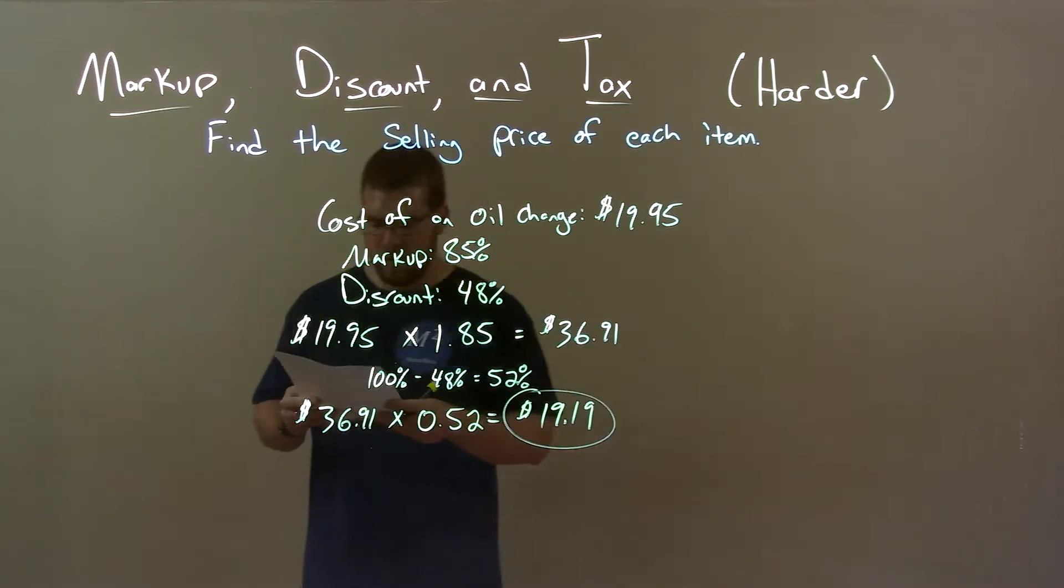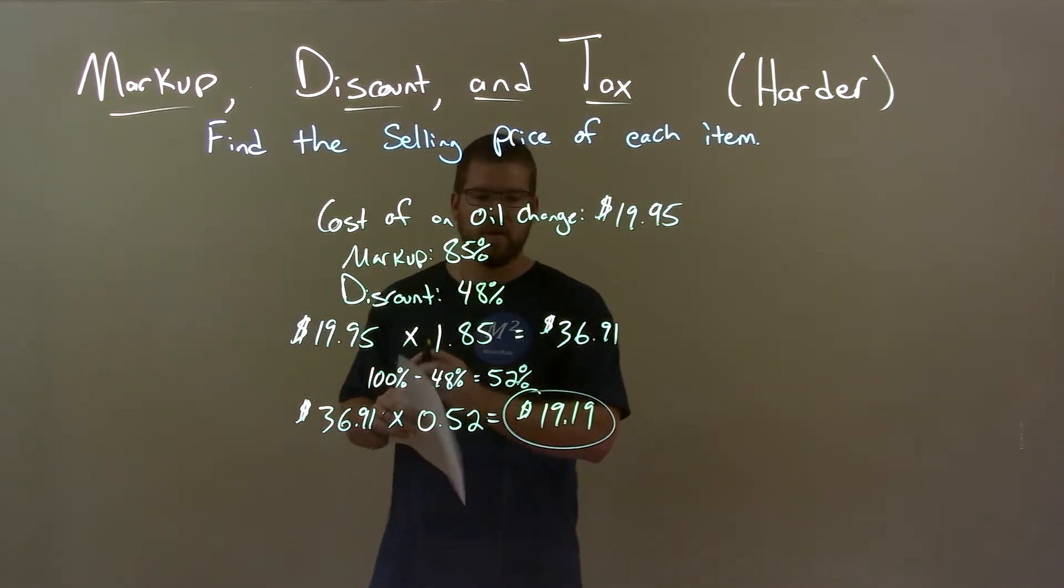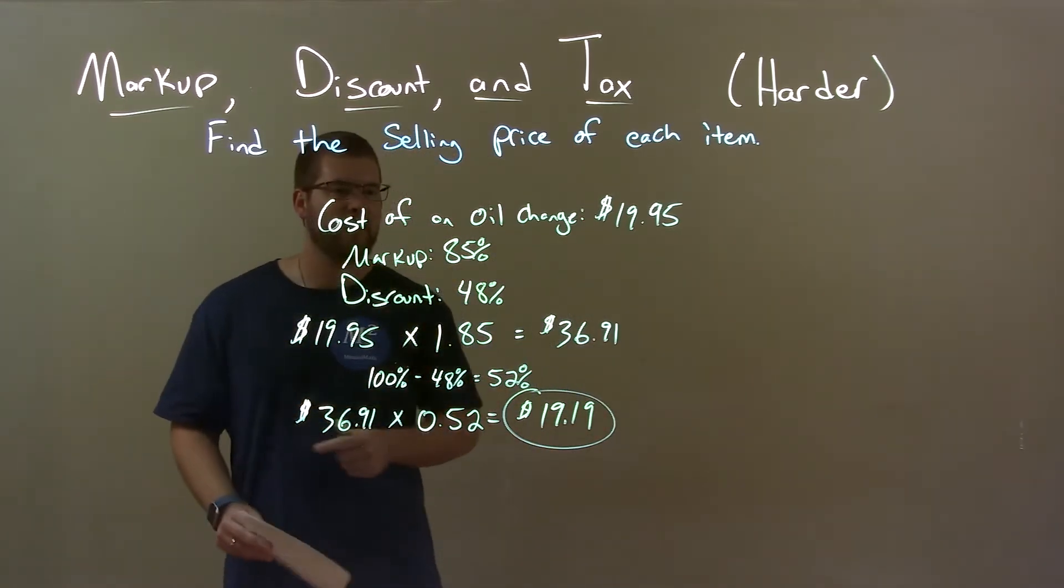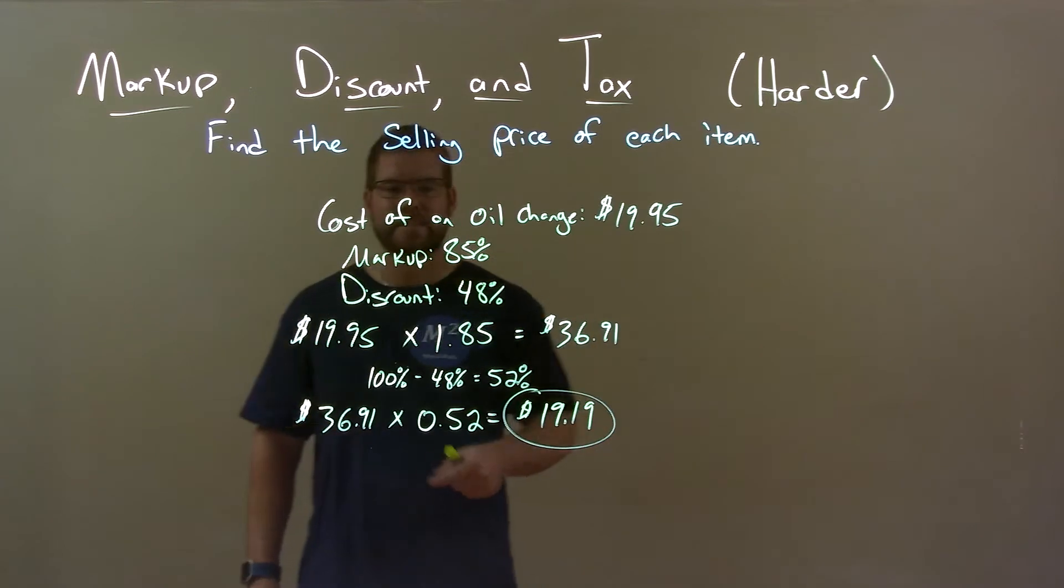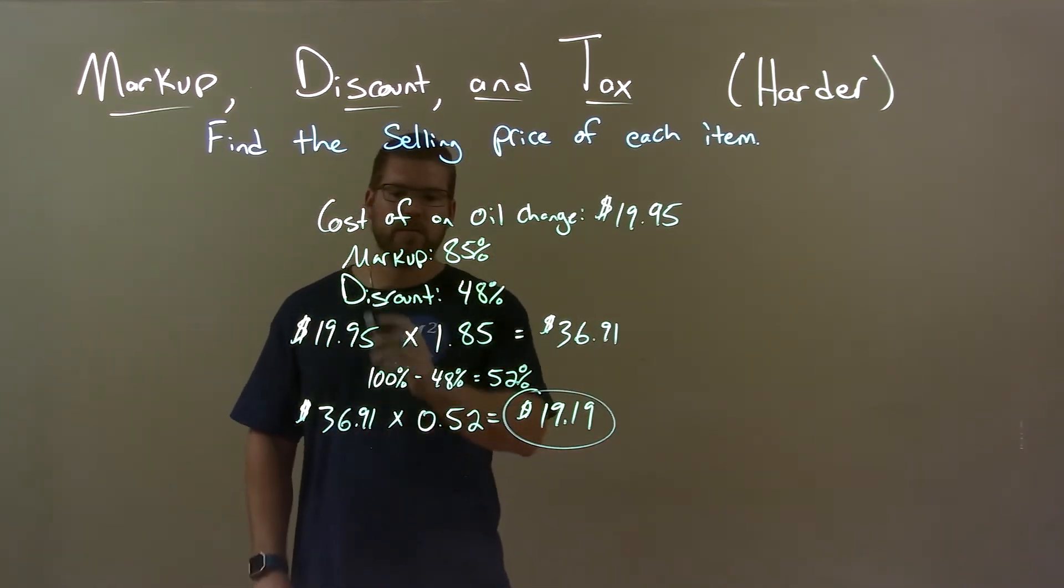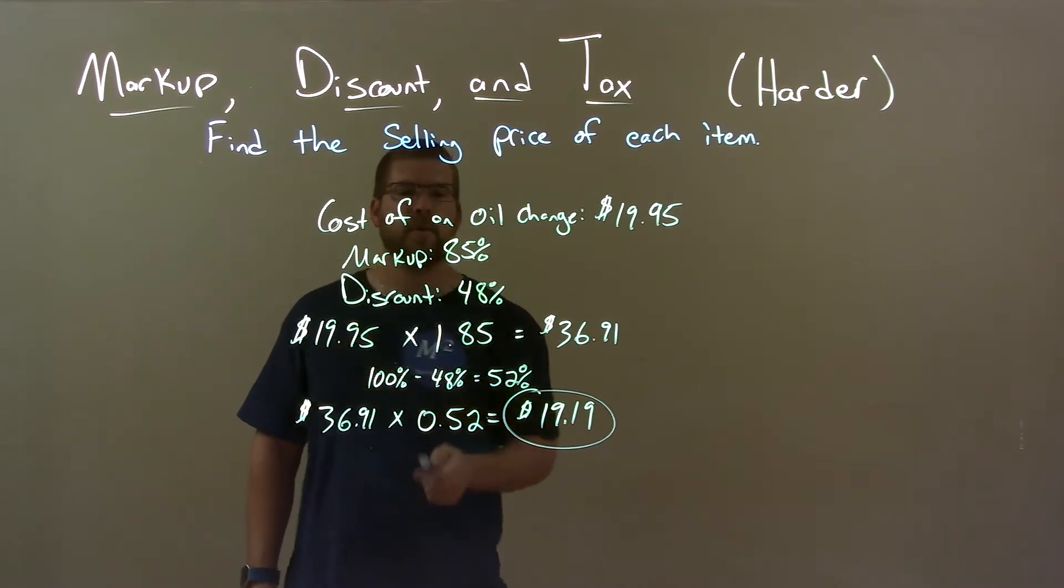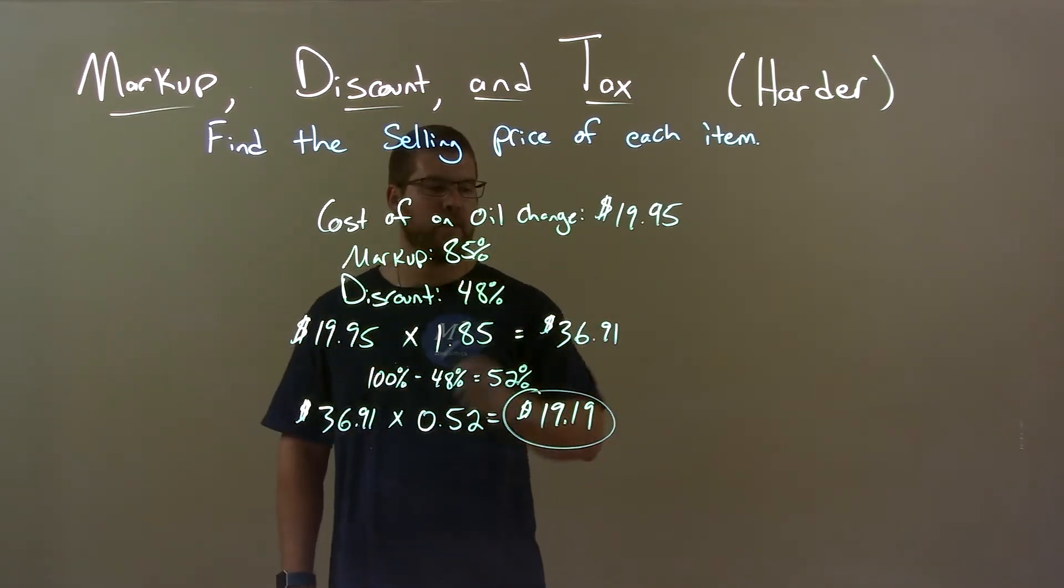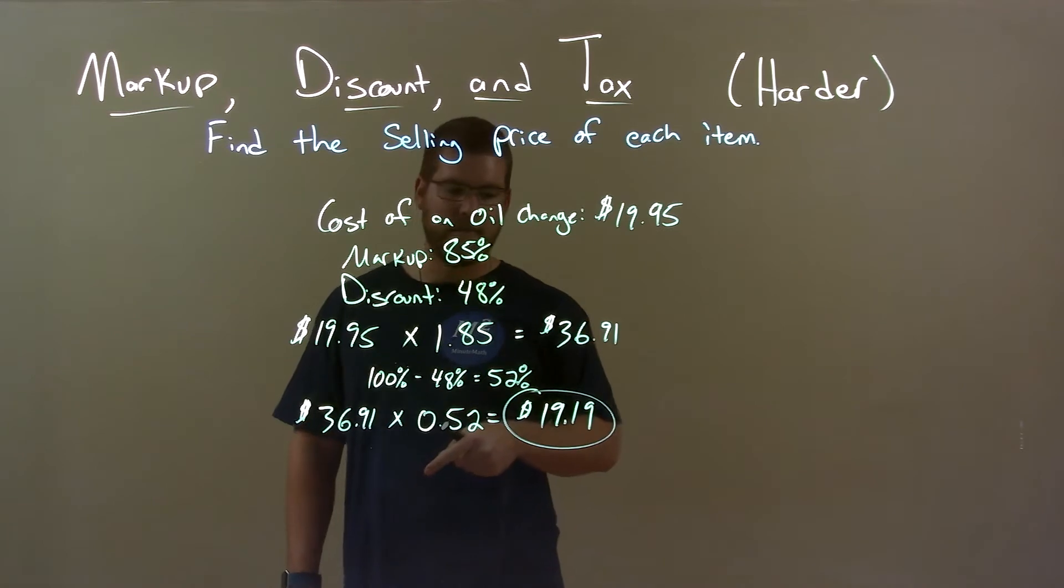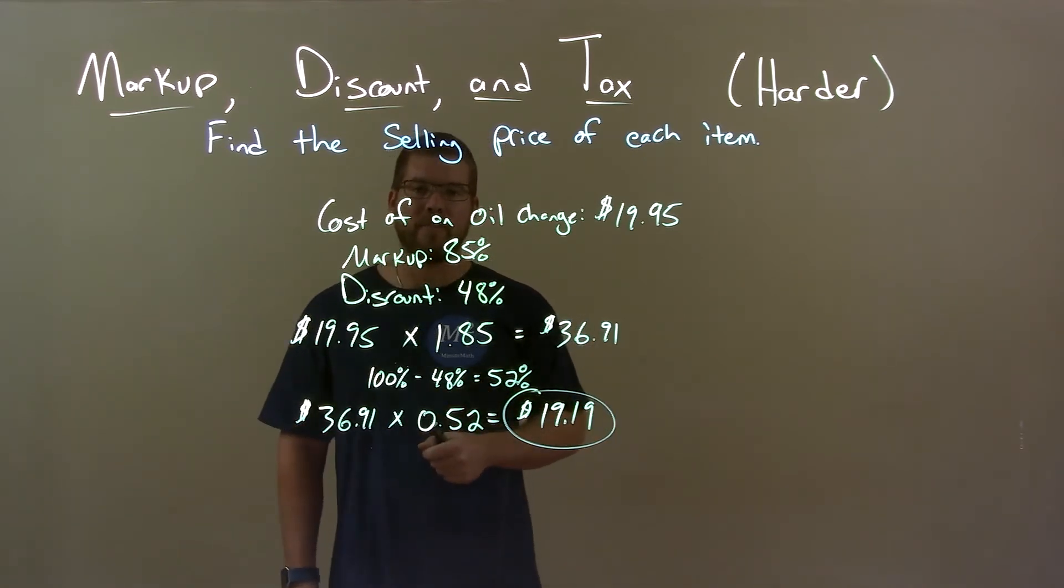Quick recap: We're given the cost of an oil change is $19.95, with an 85% markup and a 48% discount. We first start with the cost and multiply by the markup, 1.85, getting $36.91. Then we take $36.91 and multiply that by the percent we pay with a 48% discount, which is 52% or 0.52 as a decimal, giving us a final answer of $19.19.